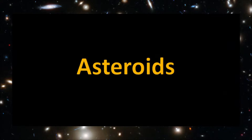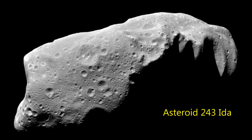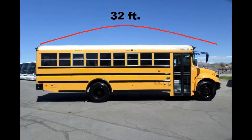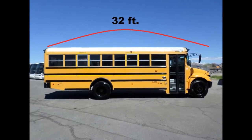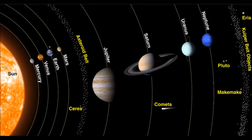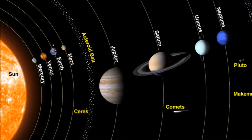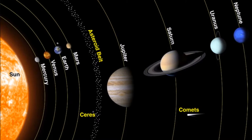Next, let's talk about asteroids. Asteroids are celestial bodies bigger than 10 meters — that's about 32 feet. They orbit the sun, and they're mostly found in a belt between Mars and Jupiter.